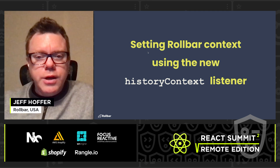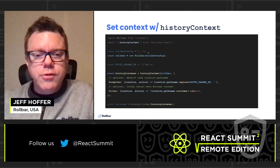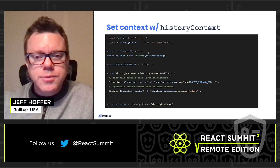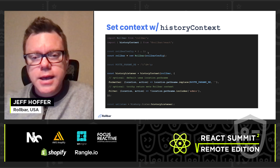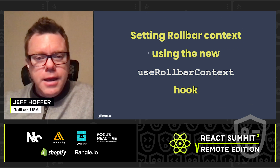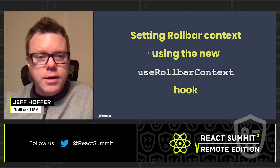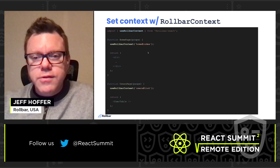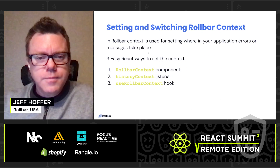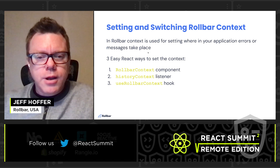As another convenience, we have the new History context listener. By using the History context and wrapping an instance of Rollbar, we can create a History listener that will automatically change the Rollbar context based on the location and history. It has two options when creating the listener to format the context and filter out some changes. Additionally, we have a third way to set the Rollbar context especially useful in functional components: the useRollbarContext hook. Here we can see setting the Rollbar context using this hook within several different functional components. Rollbar React gives you multiple ways to set the Rollbar context so you can take advantage.